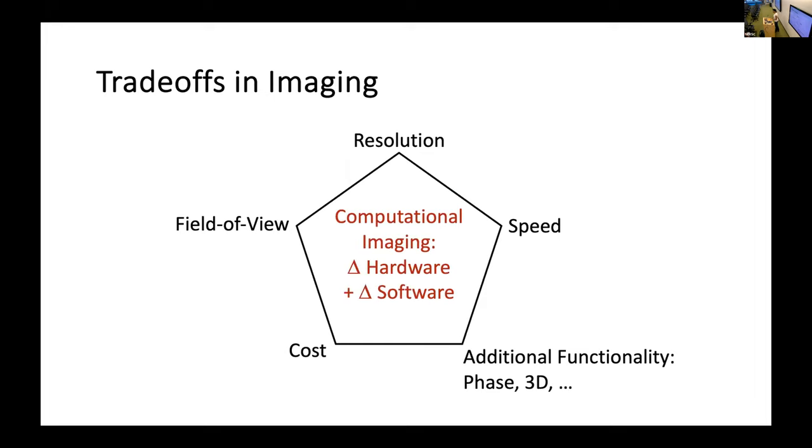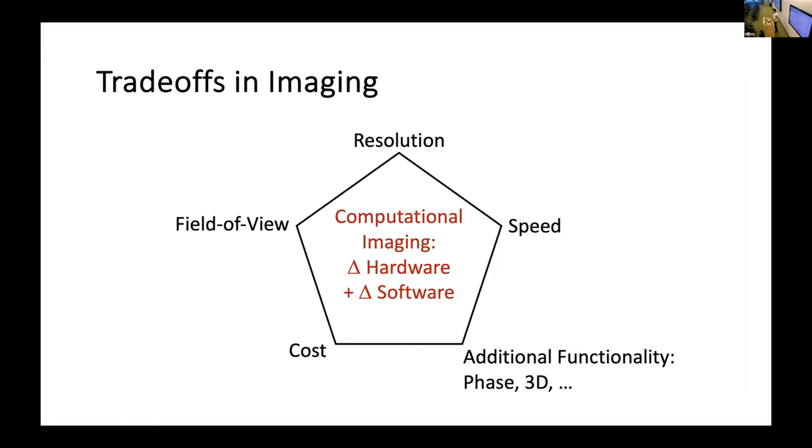However, what's done in more modern imaging systems in computational imaging is we combine hardware with software post-processing. And these tradeoffs can be done with a mixture of changes in hardware and changes in software. So for example, in LED array microscopy, you can get both high resolution and high field of view with a computational post-processing algorithm. However, you get low speed.